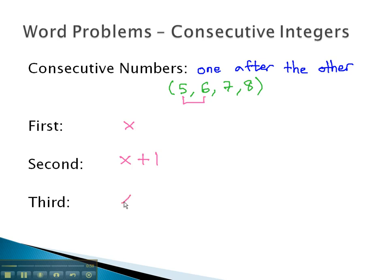To get the third integer, we simply add another 1. Now it is x plus 2. Representing the numbers in this way will allow us to solve the problem and answer the question.